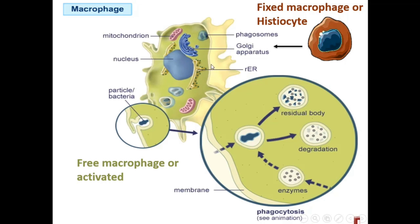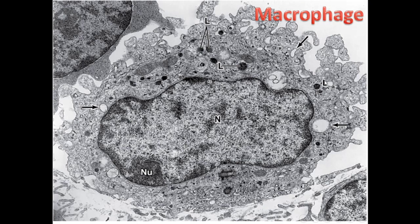When activated, the cell gets bigger, protein synthesis increases, the amount of organelles increases, and the cell has an irregular surface with folding, protrusions, and indentations. You can see the active cell starting to phagocytose a bacterium and digest it by enzymes inside lysosomes. This cell originates from monocytes inside the blood.